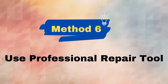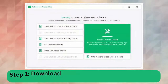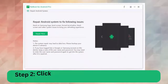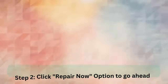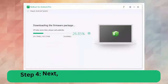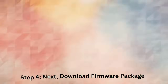Method 6: Use a professional repair tool. If you are looking for an effective and quick way to fix the issue, use Android repair software. Step 1: Download and install the Android repair tool. Step 2: Click the 'Repair Now' option to proceed. Step 3: Select the correct device info. Step 4: Download the firmware package. Step 5: Begin the Android repair system.